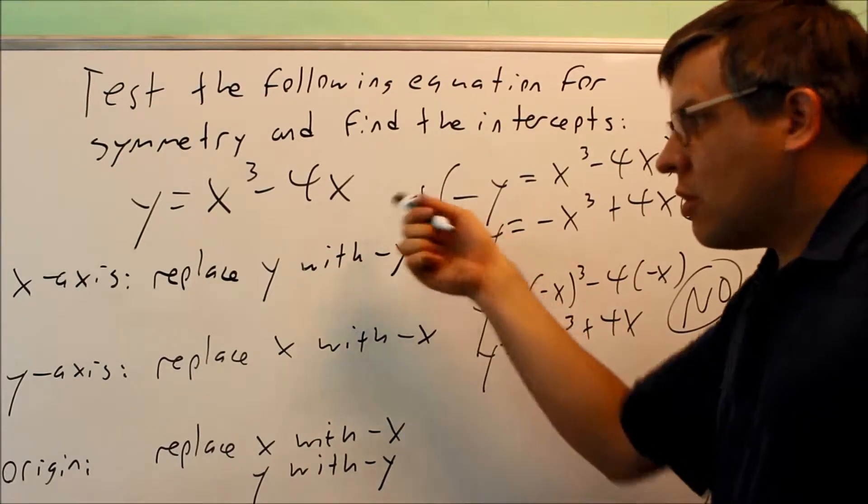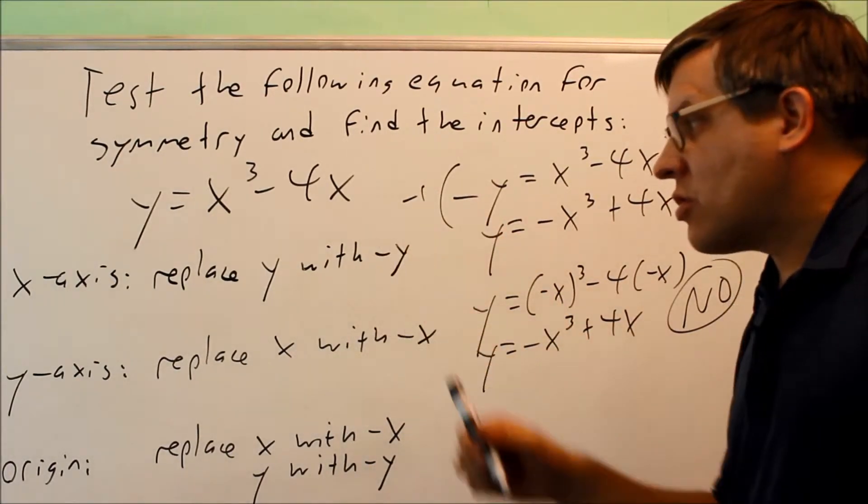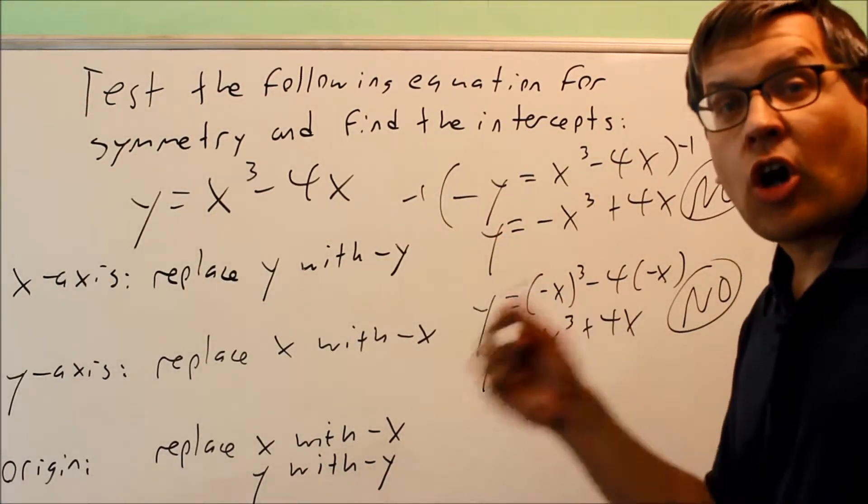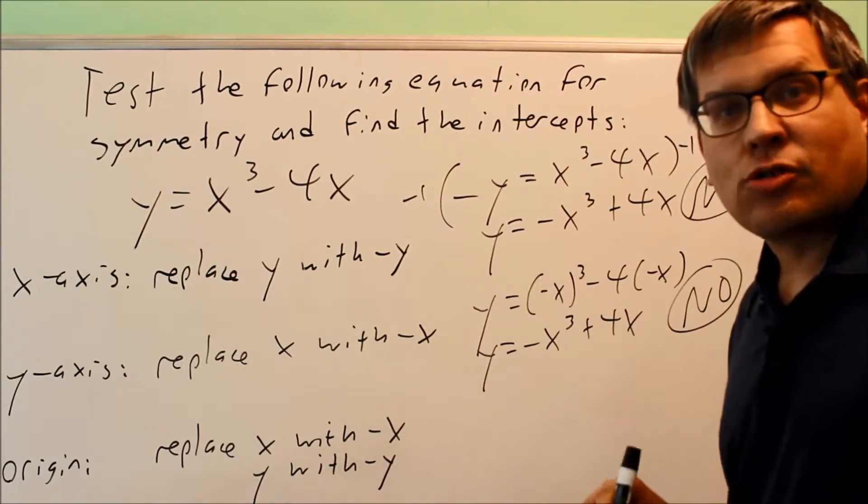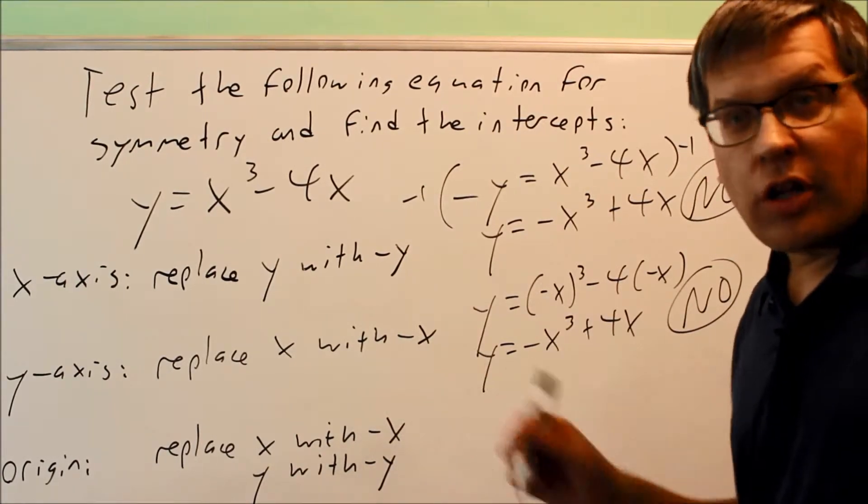So the question is, if I get no symmetry for x-axis and no symmetry for y-axis, does that automatically mean that I get no symmetry for the origin as well? Let's check it out.